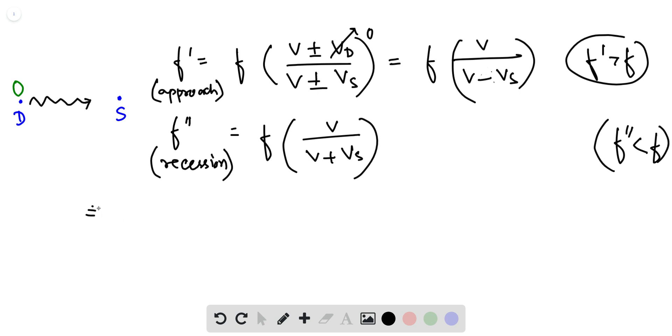Now we have both the equations that we want, and therefore the difference in the frequencies between approach and recession. We have to take F' minus F'', not F'' minus F', because we already know that F' is greater than F and F'' is less than F, which means that F' is greater than F''. So we want this difference to be positive, and this is equal to